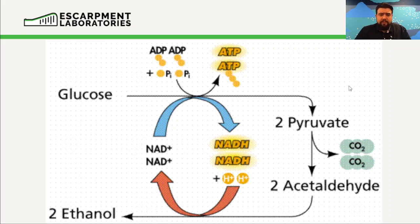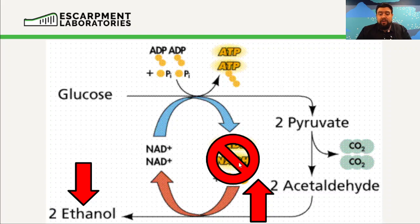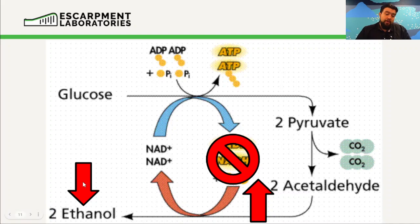What happens if we find ourselves in a situation where we've stressed the yeast cells and we are limited in NADH — the yeast cells are lacking NADH? If we don't have NADH, we're not going to see the conversion of acetaldehyde into ethanol. It's not going to happen. The environment has become much more toxic because acetaldehyde breaks down the yeast cell's membranes. We're still going to generate the ATP, but we're now going to start producing acetaldehyde in the environment, which is not good for the yeast cells and not good for us. Additionally, our ethanol concentration is going to go down because we're not producing as much.